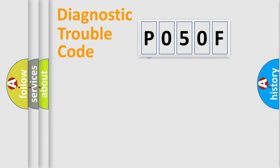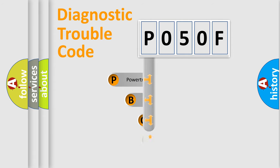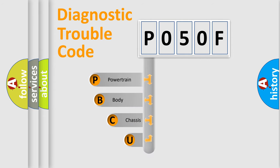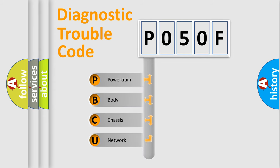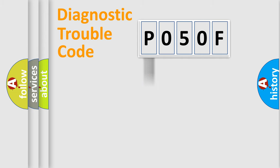First, let's look at the history of diagnostic fault code composition according to the OBD2 protocol, which is unified for all automakers since 2000. We divide the electric system of the automobile into four basic units: Powertrain, Body, Chassis, and Network. This distribution is defined in the first character of the code.